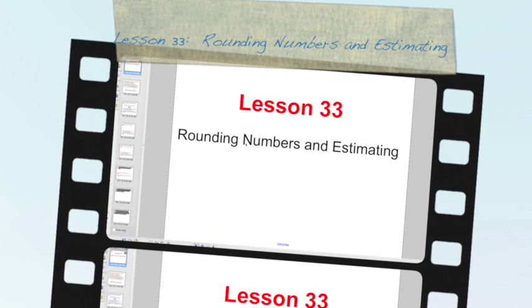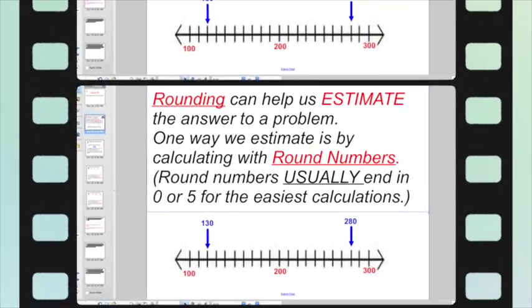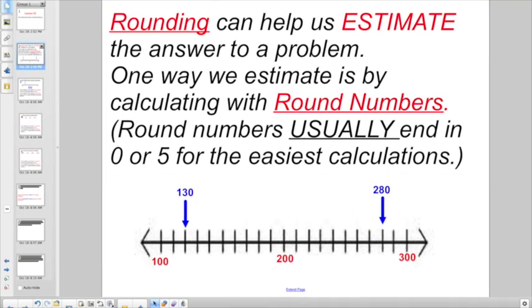We are talking about rounding numbers and estimating. When you're rounding, it can help us estimate the answer to a problem. That word estimate means you're going to get close to the right number, but not exactly. One way we estimate is by calculating with rounded numbers, because they're easier to do in our heads using our mental math. Rounded numbers, or round numbers, usually end in 0 or 5 for the easiest calculations.